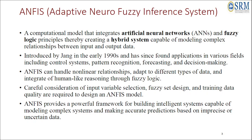In an ANFIS architecture we combine both artificial neural networks as well as fuzzy logic. The concept of the ANFIS system was introduced by Zhang in the early 1990s, and it finds applications in multiple areas such as control systems, pattern recognition, forecasting, and decision making. It can also handle non-linear relationships and integrates fuzzy logic into the neural layers when human-like reasoning is involved.